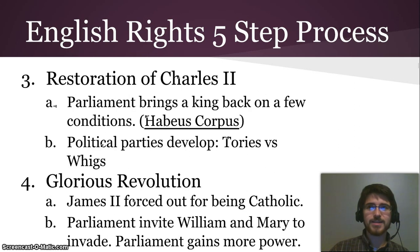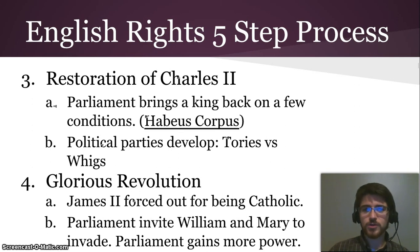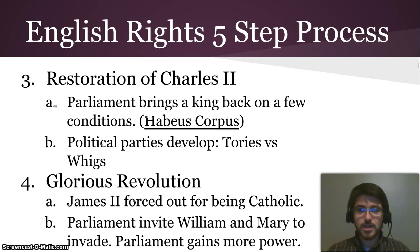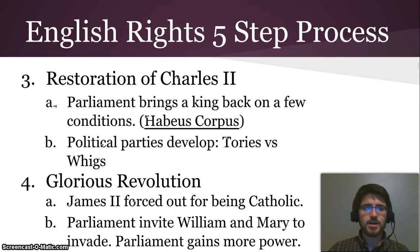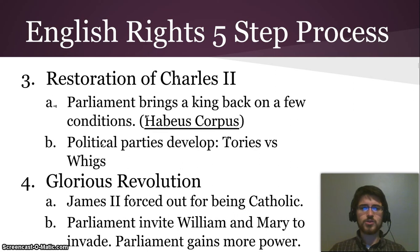After Cromwell died and his son scampered off, Charles II was asked back to rule. He was the grandson of Charles I, invited back after issues with Cromwell's succession. They did force Charles II to accept some limits on his power during the Restoration, including habeas corpus — the right not to be imprisoned without a court process. During this time, political parties also developed: the Tories and the Whigs, two British political parties split over whether to support the king.